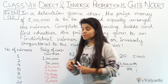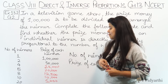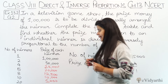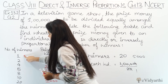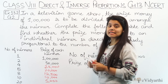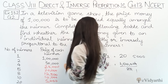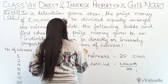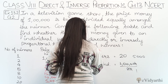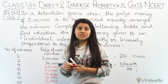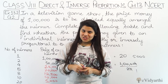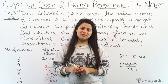Ab hamne ye table complete kar li hai. To hmare paas aa gaya ki number of winners and prize of each individual — directly proportional hai ya indirectly? We'll see ki jaise jaise number of winners badhta hai, to prize money kam hoti jaati hai. So this is the case of inverse proportion, because agar ek cheez badhti hai to doosri cheez kam hoti jaati hai. So this was question number 2 of exercise 3.2. Now let's come to the next question.